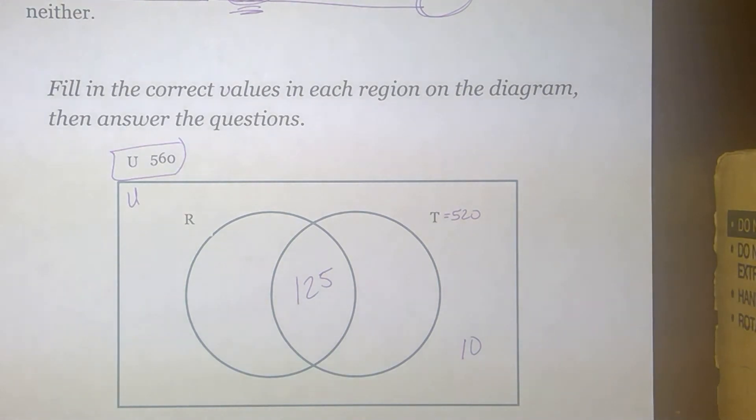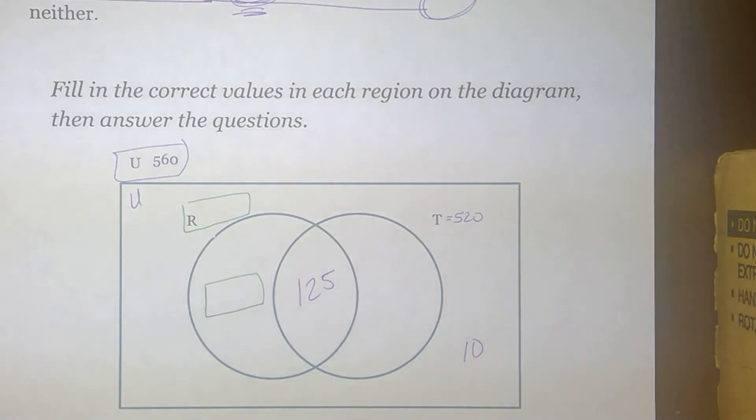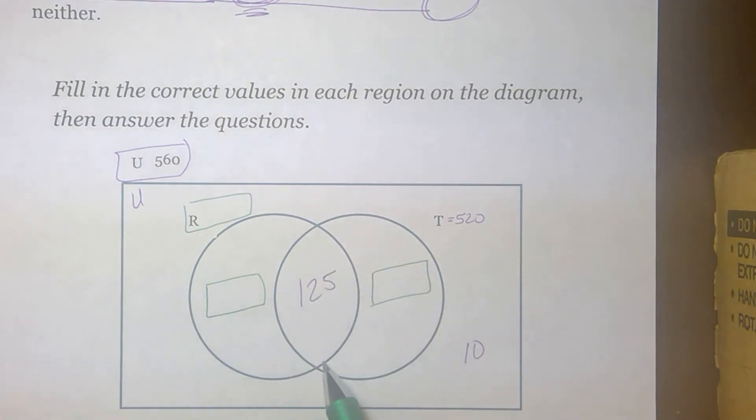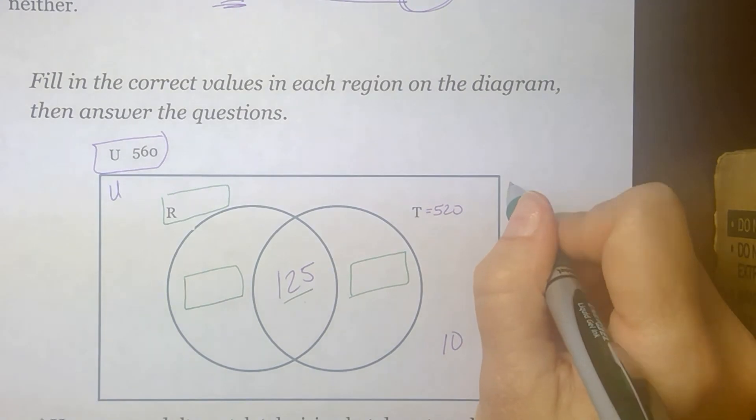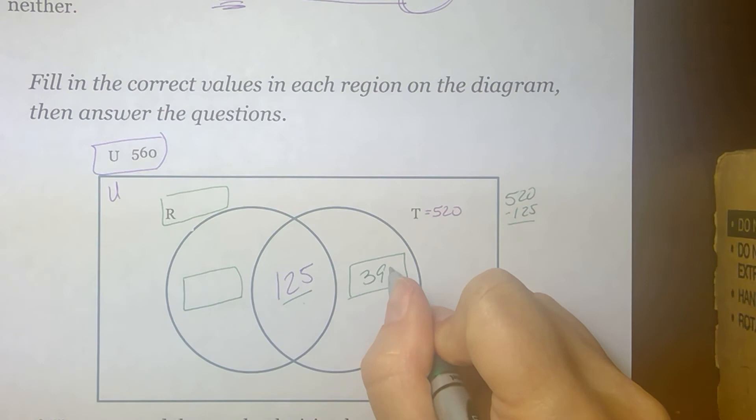We have some missing blanks to fill in. We don't know the total number of people that said they read. We don't know how many people just read. And we don't know how many people just watch TV. So those are our three missing values. Do you see how we can start filling any of these in? Well, we know that 520 people total said they watch TV. That means this loop needs to have a sum of 520. 125 do both. So the rest of those people just watch TV. So we can come over here and we can subtract. We can say, all right, I know I have a total of 520 people who said they watch TV. 125 of those also read how many people just watch TV. Well, when I do that subtraction, I get 395.